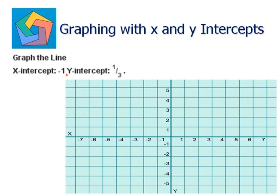The x-intercept of negative 1 means the point becomes negative 1 comma 0, and it lies here on the graph. The y-intercept of 1 by 3 means the point becomes 0 comma 1 by 3, and it lies here on the graph.